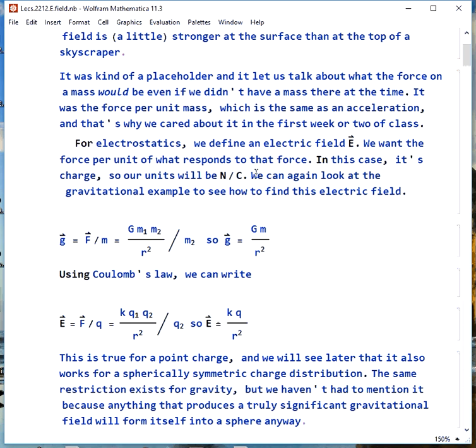How do we find this electric field? We look at the gravitational example. Little g was Newton's law of gravity divided by the size of the test mass, so this gives us the gravitational field for this mass m, which in that case would have been mass of the Earth.